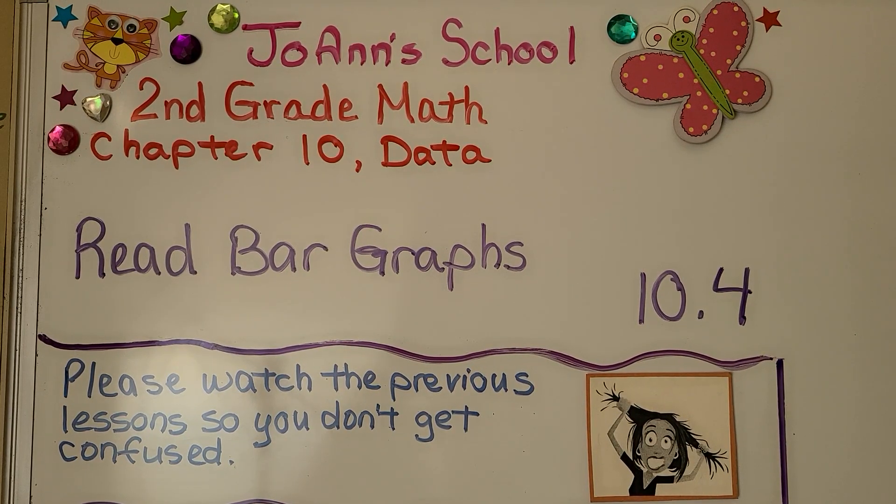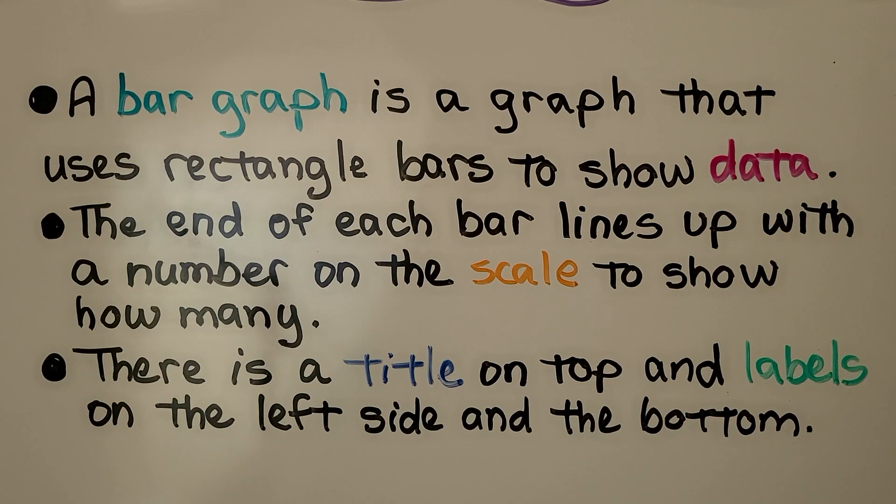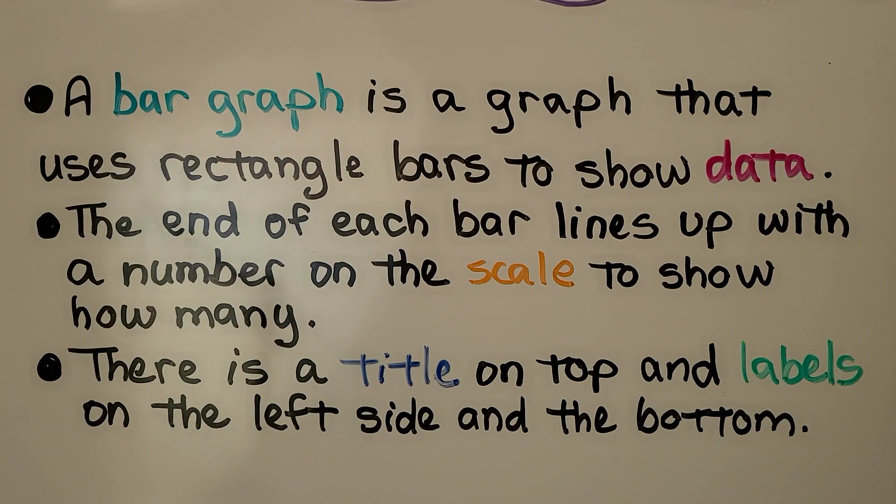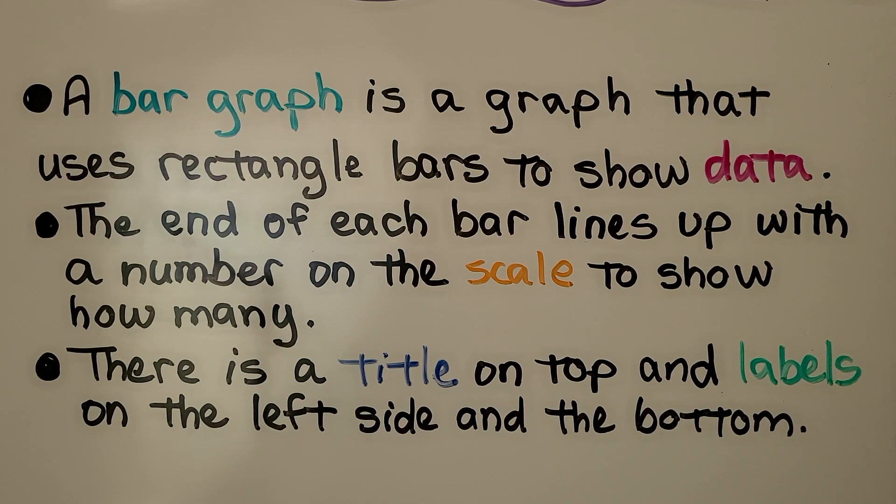Lesson 10.4: Read Bar Graphs. A bar graph is a graph that uses rectangle bars to show data. The end of each bar lines up with a number on the scale to show how many. And there is a title on top and labels on the left side and the bottom.